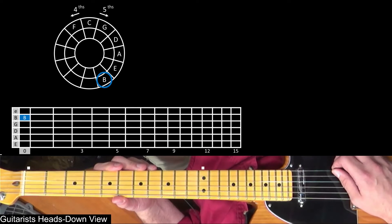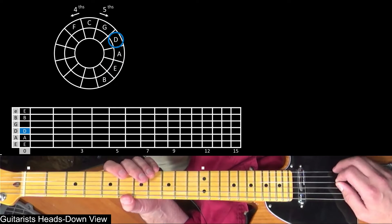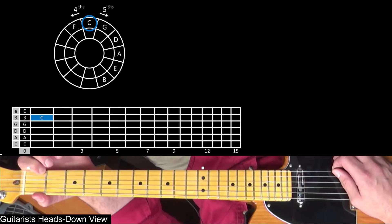This sequence is also found for the open strings: B, E, wrap, E, A, D, G, shift, C, F.